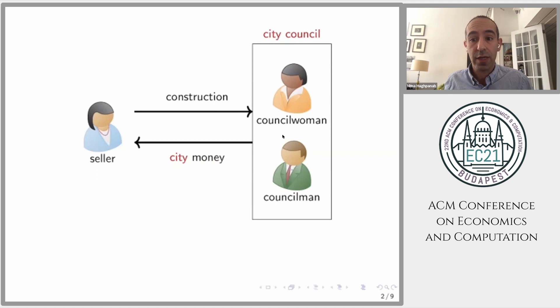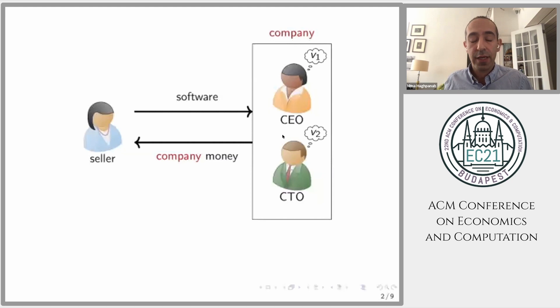For the rest of the talk, I will stick to the example of selling a software to a company. We assume that each agent in this group has a private value for this software, and these values are privately known. They're drawn independently from each other from known distributions, but those distributions need not be identical.